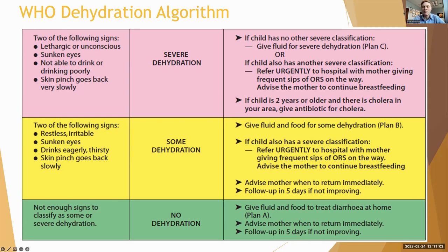The WHO has an algorithm developed back in the 1980s recommending four clinical signs to divide patients into the categories of severe, some, or no dehydration. Crucially, this algorithm was developed based purely on expert opinion with no empirical data, and it was never validated — not in children for whom it was originally developed, nor when it was later extended to older children and adults. There is a big difference between examining a 58-year-old and a five-month-old with diarrhea.